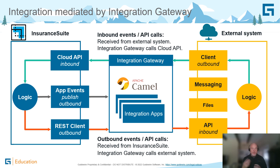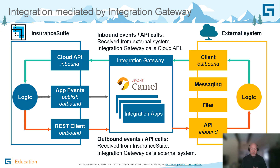Last but not least, maybe I need my InsuranceSuite application to call an external system. For example, let's say it's a fraud score. ClaimCenter can make a request via Integration Gateway and get the fraud score from the external system. The external system provides back that fraud score and returns it to ClaimCenter. Again, we've got the separation of duties between the business logic inside of our InsuranceSuite applications and the core integration logic inside of Integration Gateway.